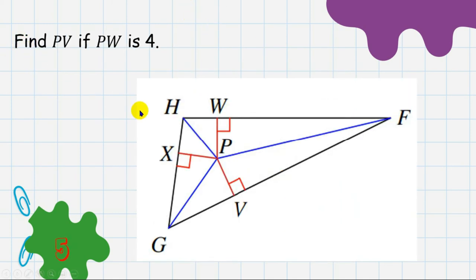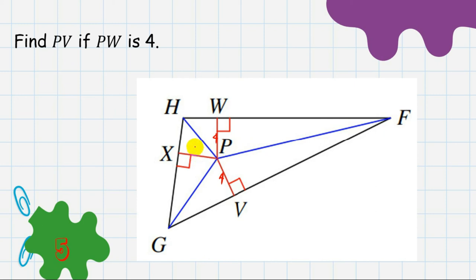Question 5: line segment PV is asked, and the given is PW from the in-center, which is point P — PW equals 4. Since PV is also a line segment from the in-center to a side, and the in-center is equidistant from all sides, PV equals 4 as well. The answer is 4.